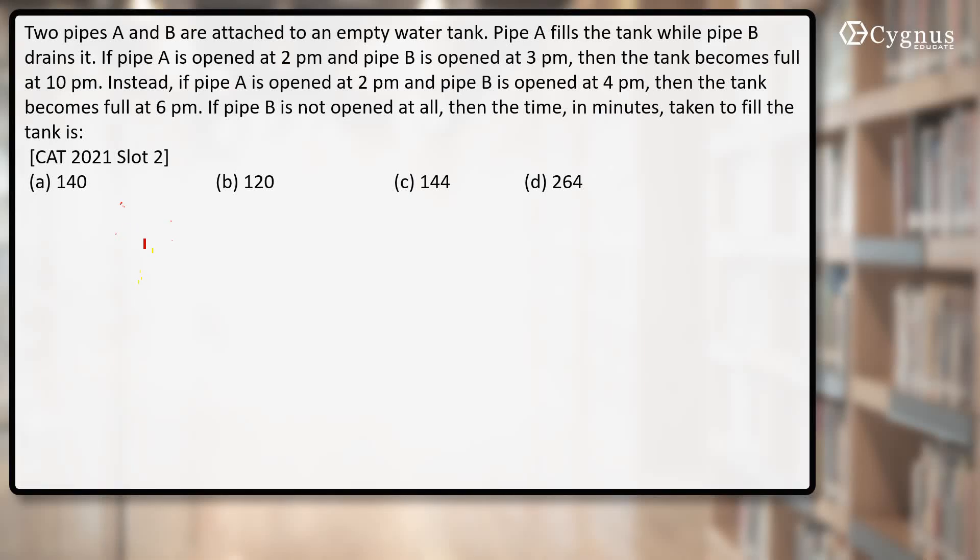Hi, this is a question from CAT 2021 Slot 2. It's all about pipes. Let's see what is given in the question. Two pipes A and B are attached to an empty water tank. Pipe A fills the tank while pipe B drains it. If pipe A is opened at 2 p.m. and pipe B is opened at 3 p.m., then the tank becomes full at 10 p.m.